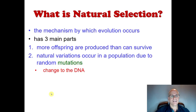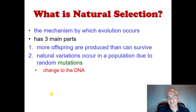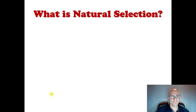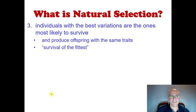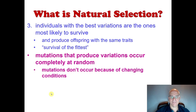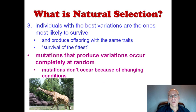Going back to the three parts of natural selection: number one, more offspring are produced than can survive. Number two, variations within our population occur because of random mutations — like some having longer necks. Number three, those individuals with the best variations — in this case the longest necks to reach higher leaves — are the ones most likely to survive and have offspring that also have long necks. Knowing about these parts of natural selection is important, so please be familiar with all three.